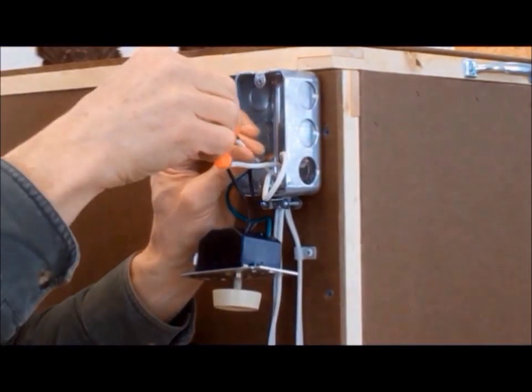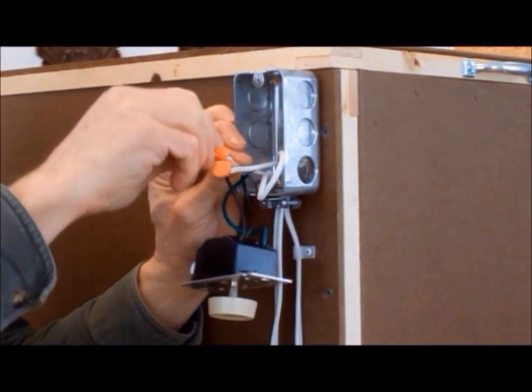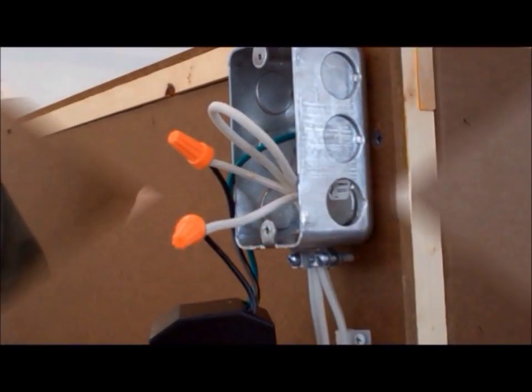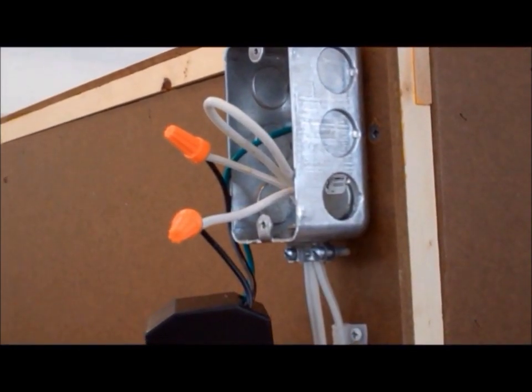Connect the ground, a green wire, to the junction box by one of the mounting screws. This is how the wiring should look when you are done. Nothing to it.